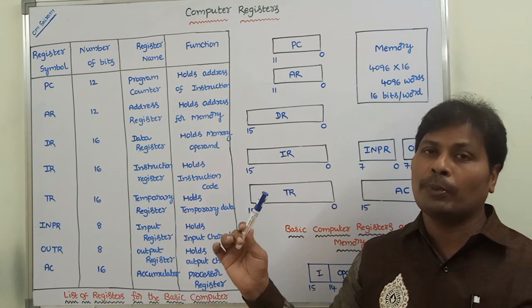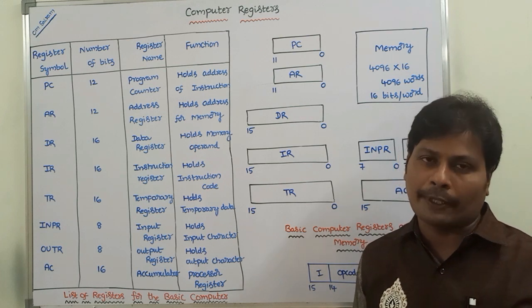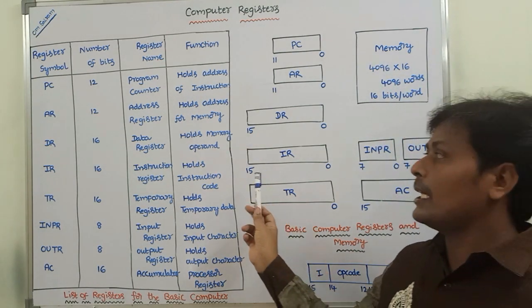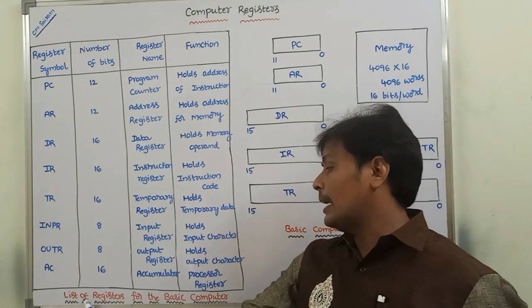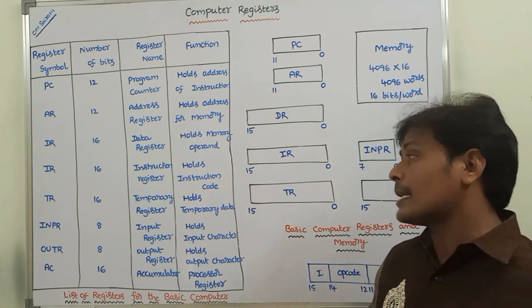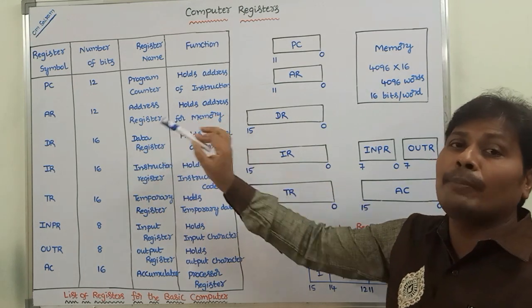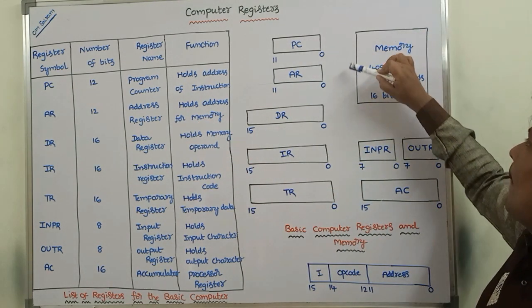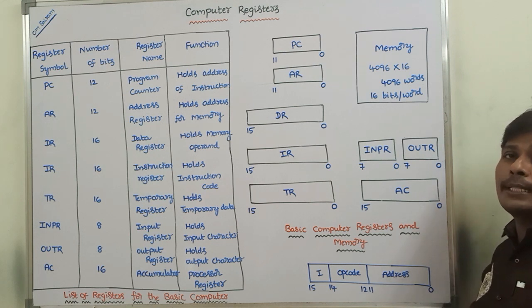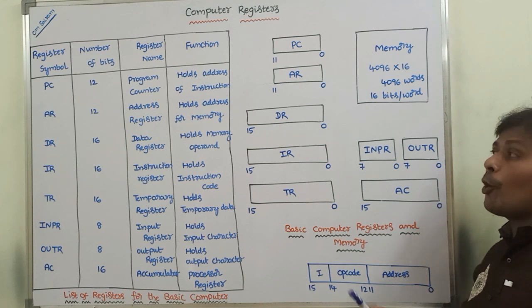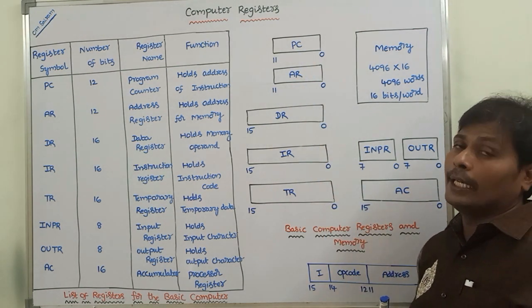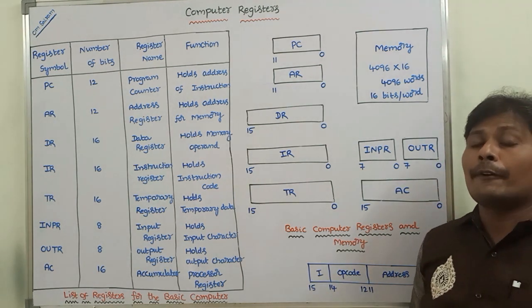This is the description about computer registers. Whatever we discussed here can be represented within a table — this table is the list of registers for a basic computer. Any basic computer contains these 8 registers, and these 8 registers can be represented in a graphical manner. This covers the description of computer registers — how many bits each register contains, what the function of each register is, and what instruction format we use for storing the instructions.